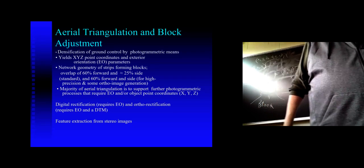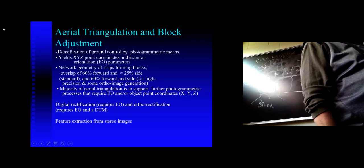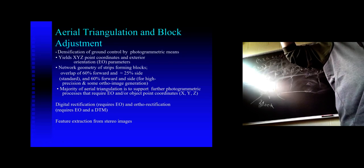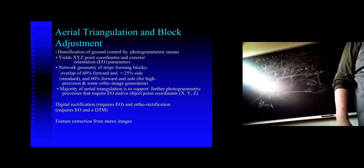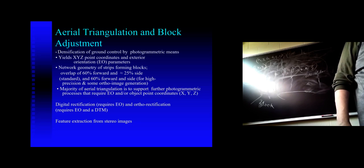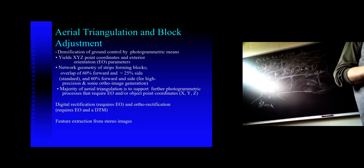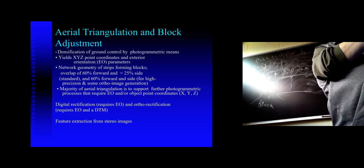Technologically, from phototriangulation we get all parameters of exterior orientation for each image included in the block. We require at least 60% overlap. Why 60%? Because if you don't have 60% overlap, some tie points included in stereo pair 1–2 will not be visible in stereo pair 2–3, and the connection between pairs will be broken.